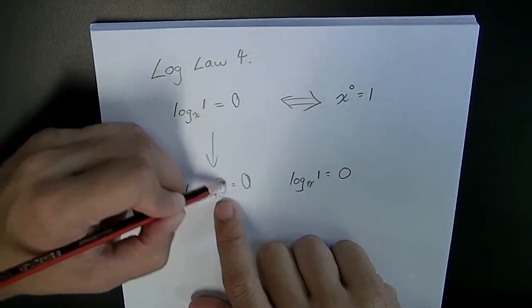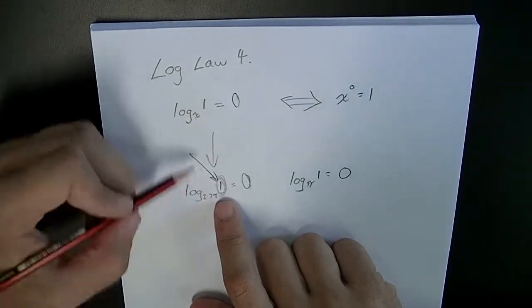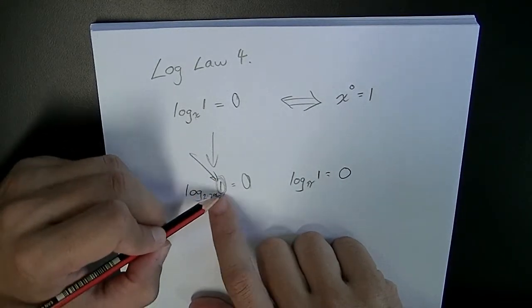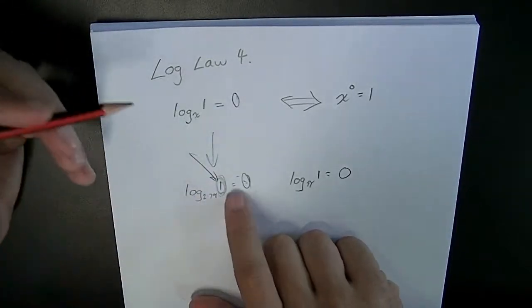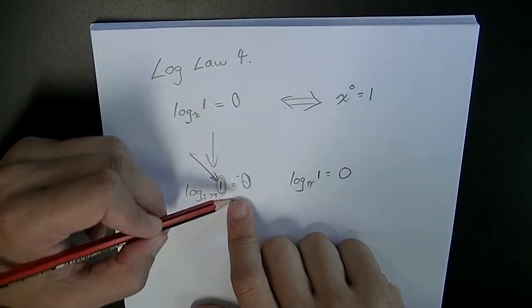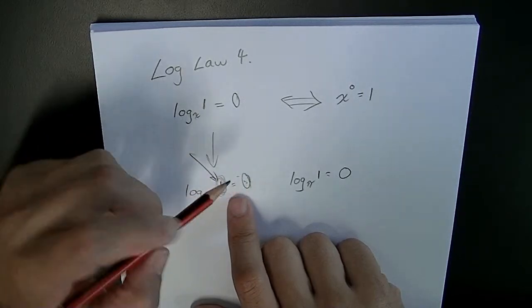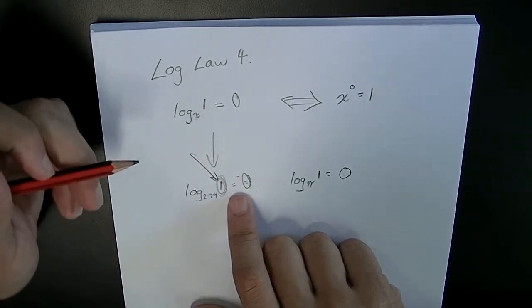Anytime you see a 1 there, log base something of 1, you'll be able to say 0. Really important rule, really simple rule, but I guarantee some of us will get stuck at points and forget to use this rule. Make sure that's not you.